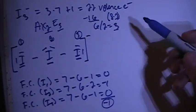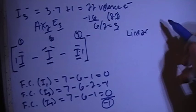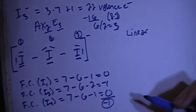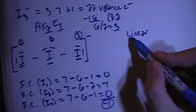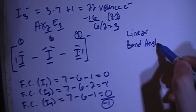Now let's talk about the shape. This is going to be a linear shape because you have the two peripheral atoms and then three lone pairs of electrons. With linear shape, the bond angle is going to be 180 degrees.